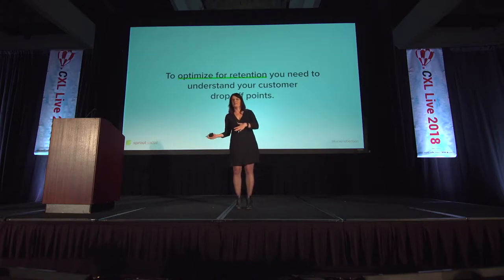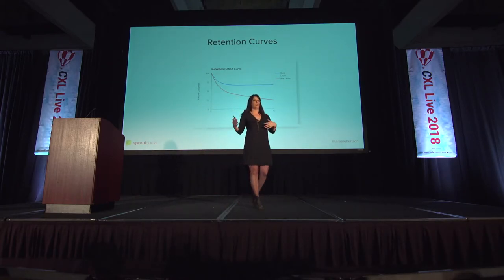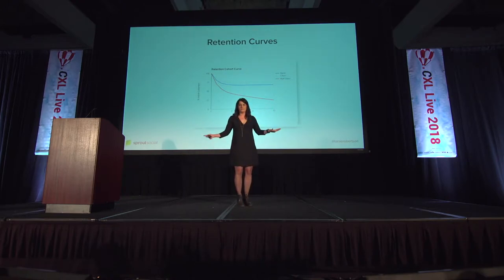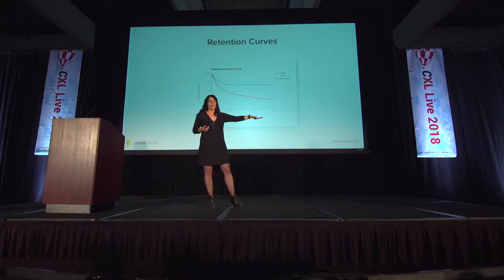To optimize for retention, you really have to understand your customer drop-off points. The way we looked at understanding retention was first by looking at our retention curve. You can see retention come in two ways: good churn and bad churn. The big difference is that over time, that number should even out — you will always lose some customers, but does it eventually hit a point that stays stable? If you're not hitting that point and you see that retention curve going down, you've got a big problem.